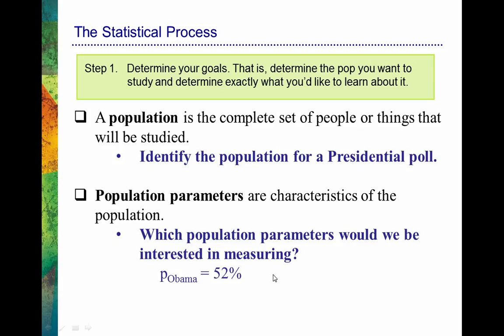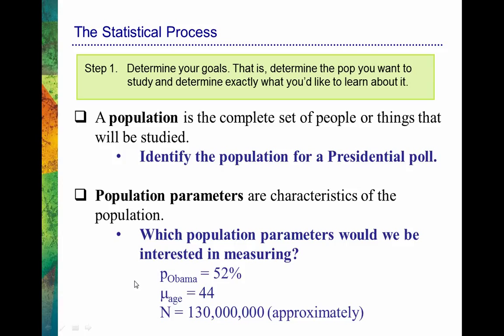Another thing we might want to find out is the average age of a voter. In statistics, when we compute an average we call it a mean. When dealing with a population parameter — a mean for the entire population — we use the Greek letter mu (μ), with a subscript for age. Let's say the average age of a voter is 44; that's a population parameter. How many people are going to vote? Let's say about 130 million — this capital N represents the number of people in the population, also a population parameter.